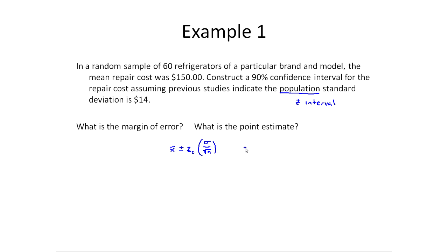Now zc is a critical value from the standard normal distribution. zc for some common values, for common confidence levels, is 1.645 for 90%, 1.96 for 95%, and then 2.575 for 99%.